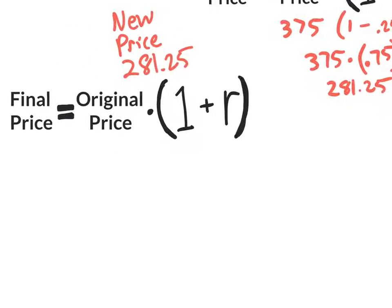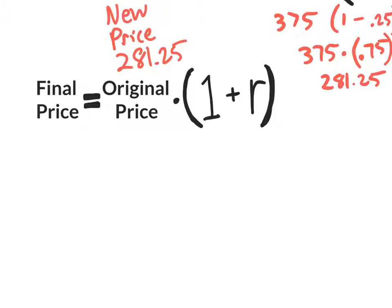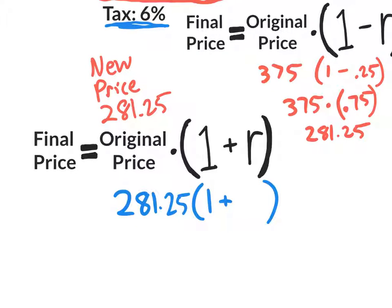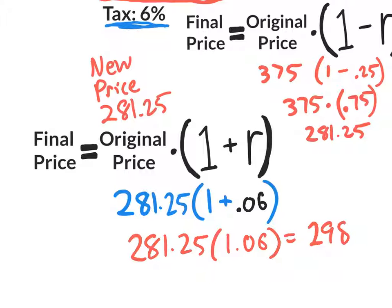So here we go. We're going to take that new price and plop it right there. It's going to be 281.25, and we're going to multiply it by 1 plus R. And we said that the R was 6%. So as a decimal, what's it going to be? 0.06. So 0.06 is our decimal. So now we need to do this with the calculator, 281.25 times 1.06. If you want to add to that in your head, 1 plus 0.06 is 1.06. So 281.25 times 1.06, we will get 298.125.